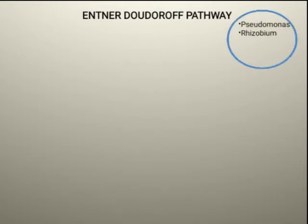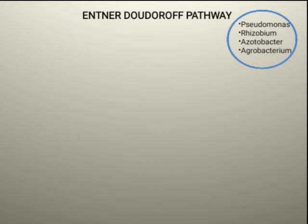Other examples include Rhizobium, Azotobacter, and Agrobacterium — these are all bacteria that use the EDP pathway. This EDP pathway is found specifically in prokaryotic cells.